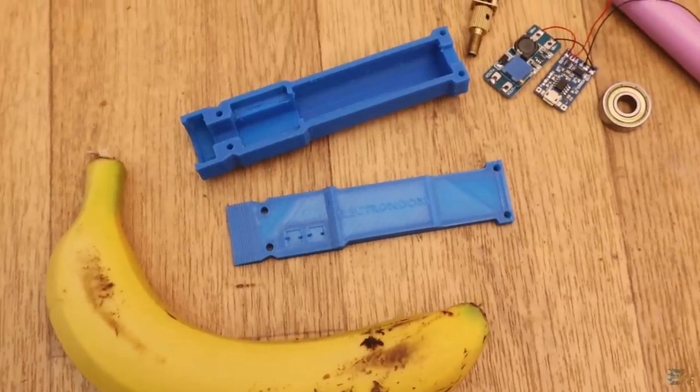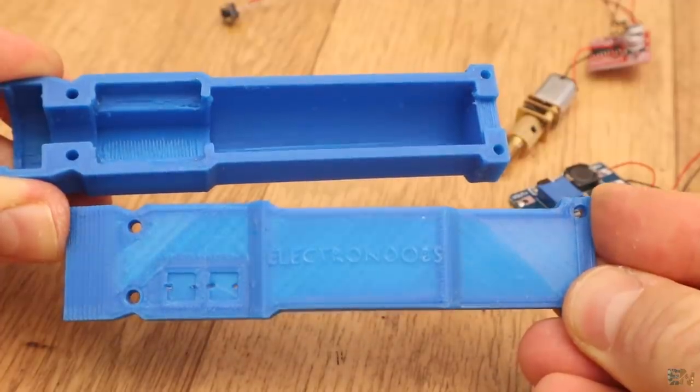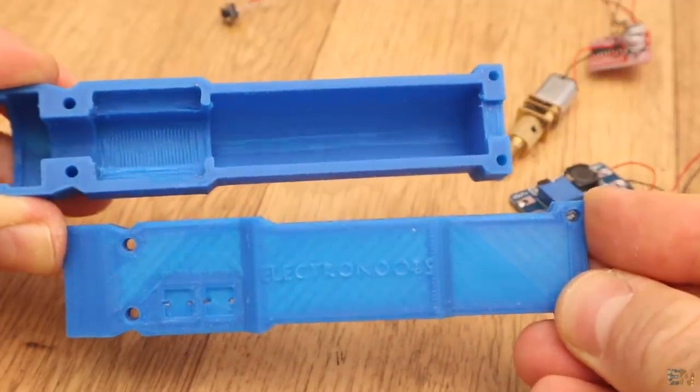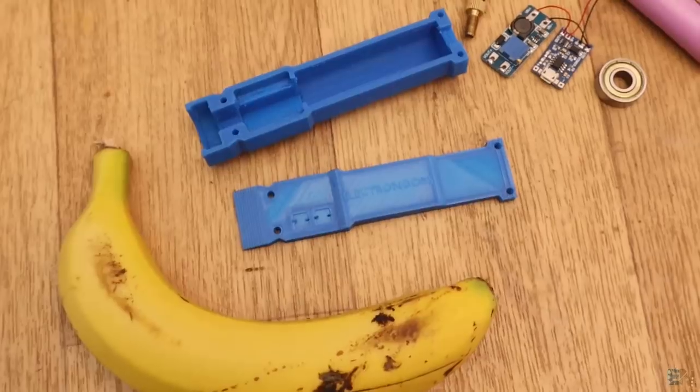For that, I've printed the screwdriver case using PLA material, two perimeters, 20% infill, and 0.4mm nozzle. The case is made out of two parts, and as you can see, I've tried to make it as small as I could.